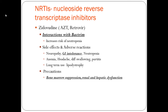The first drug class we'll talk about are the NRTIs, or nucleoside reverse transcriptase inhibitors. Our prototype drug for this is AZT, or Retrovir. There are interactions with Bactrim — the interaction increases neutropenia. Additional side effects and adverse reactions are neuropathy (numbness and tingling), GI intolerance (nausea, vomiting, diarrhea), neutropenia, which decreases white blood cells, anemia, headache, and difficulty swallowing.